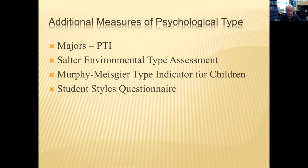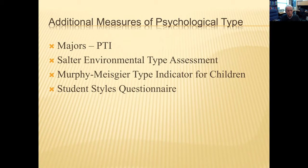There are measures developed for use with children. The Murphy MySky type indicator can be used as young as age five or six to look at the developmental unfolding of these preferences. One I really like was developed by my colleague Tom Oakland at the University of Texas at Austin: the Student Styles Questionnaire, still published by Pearson. It correlates very highly with the MBTI at around age 14 and goes down to age eight.